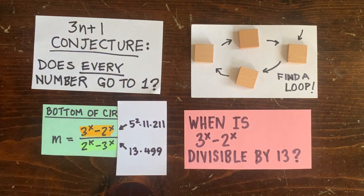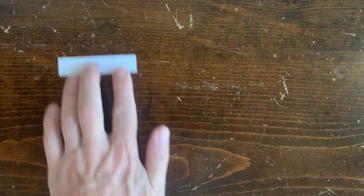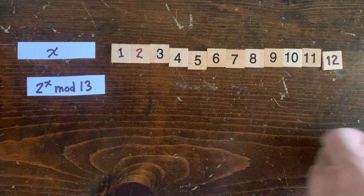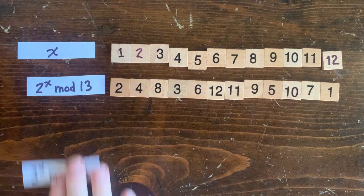So for example, when is 3^x minus 2^x divisible by 13? So we wrote out the remainders of 2^x when divided by 13 for various x. And here are the remainders of 3^x when divided by 13.